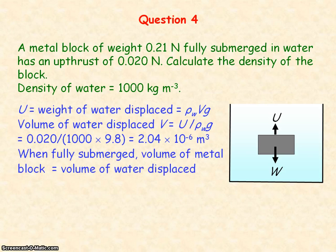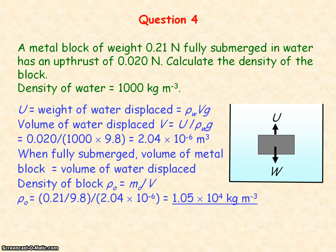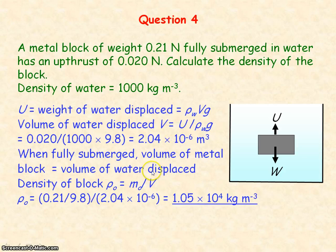When the block is fully submerged, the volume of the metal block equals the volume of the water displaced. We can then find the density of the metal block, which is the mass of the metal block divided by its volume. The mass is its weight divided by 9.8, then divided by the volume of the metal block — which equals the volume of the water displaced — giving a density of 1.05 times 10 to the 4 kilograms per metres cubed.